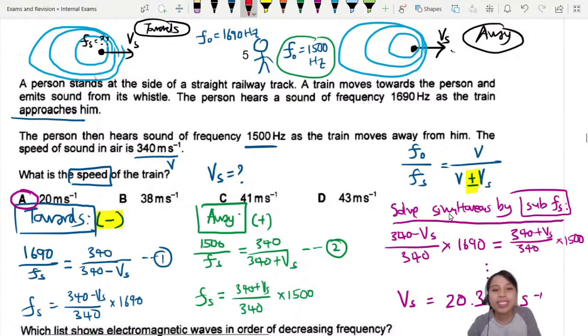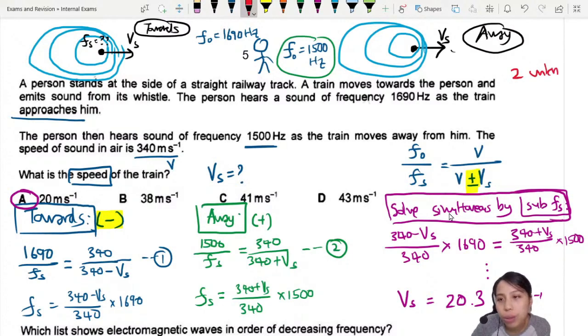Just remember, if you have two unknowns, means you need at least two equations to find the values of any of those unknowns. Keep that in mind when you're doing math, especially if you don't take maths and find this a bit strange.